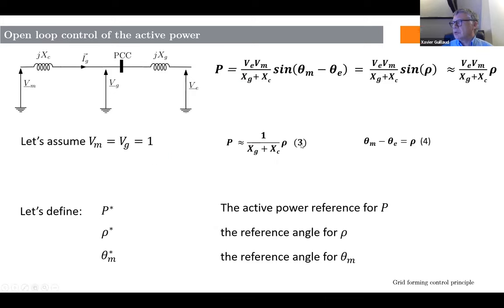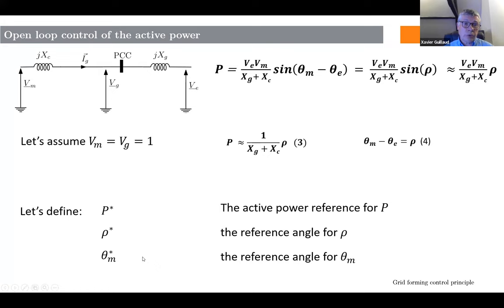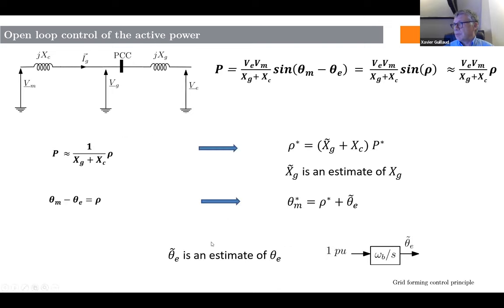For the open-loop case, using this formula — where everything is in per unit and the voltage is considered around one per unit — we have this formula where the argument is the angle difference. If we define P* as the reference for the active power, and theta* as the reference angle for theta_m, we can calculate it very easily. From P* we invert the formula to obtain theta*, which is the angle of the modulated voltage.